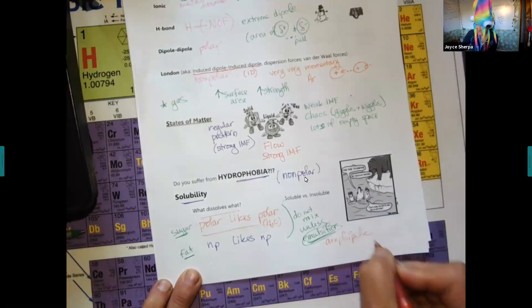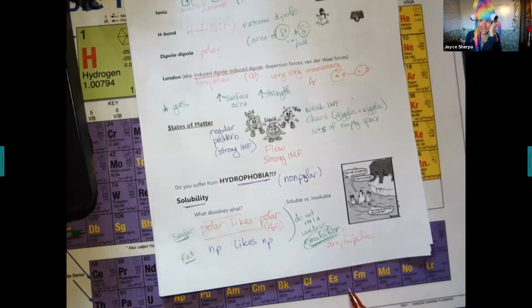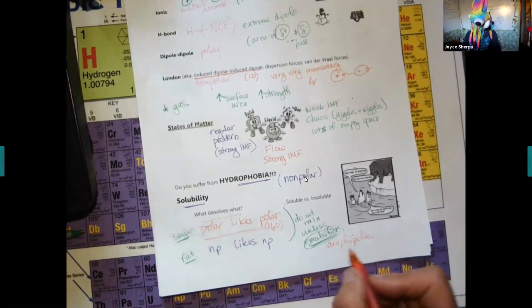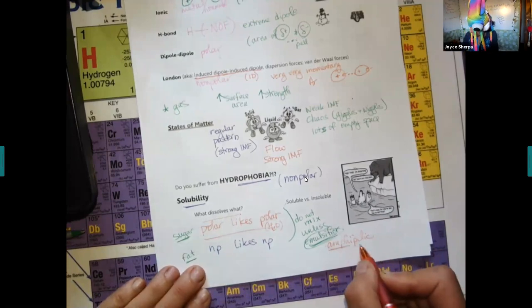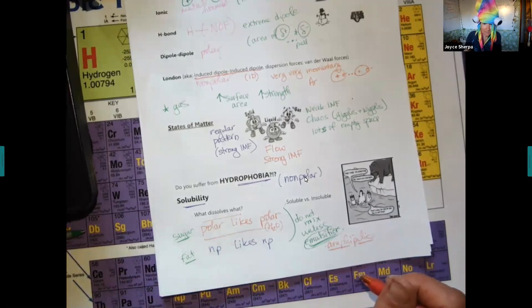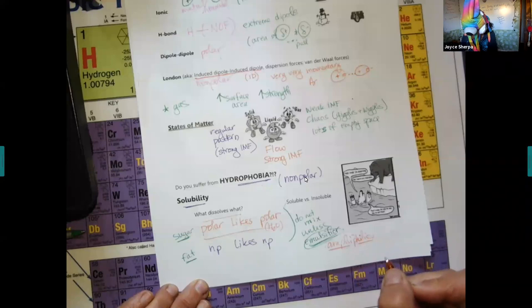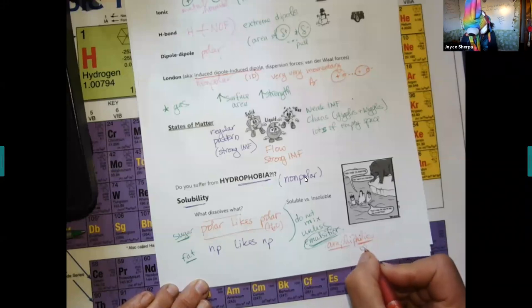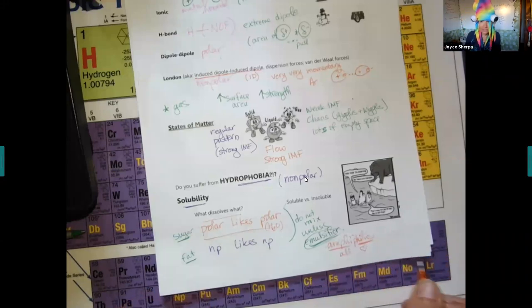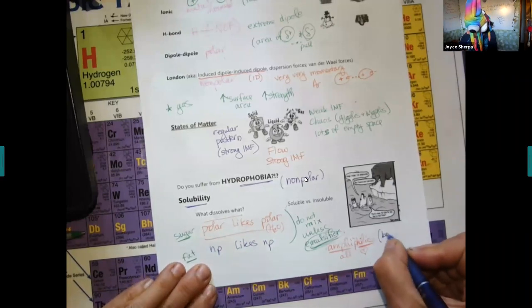Amphi. I never actually saw this word until six months ago. It is something, amphi means both. I think they're trying, I don't know if they misspelled it. They're supposed to say amphiphilic. This means love. This means all. They love everything. They are both polar and nonpolar.